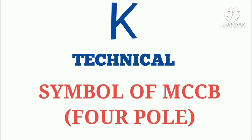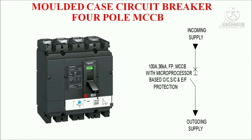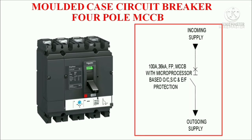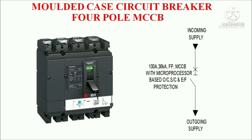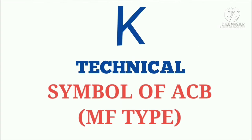Symbol of MCCB 4 pole — moulded case circuit breaker. The symbol of 4 pole MCCB is shown here, and the physical appearance of MCCB is also shown here.